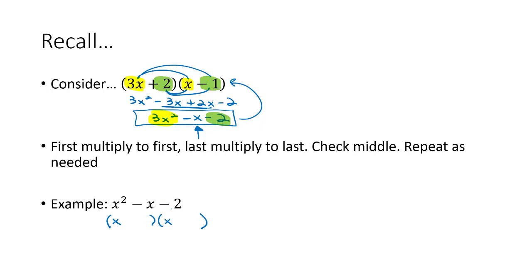The last term needs to multiply to be -2. Well, the only way to get -2 is 2 times 1. Not sure which one needs to be negative, but let's guess. Let's guess -2 and +1. Now we'll check the middle term. Multiplying the outside, x times 1 is x. Multiplying the inside, -2x. x - 2x is -x. Exactly like we wanted in the middle term.